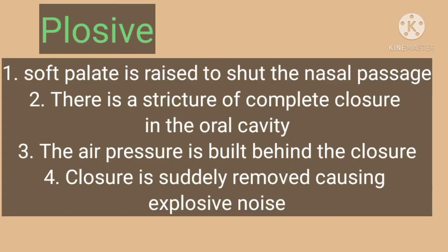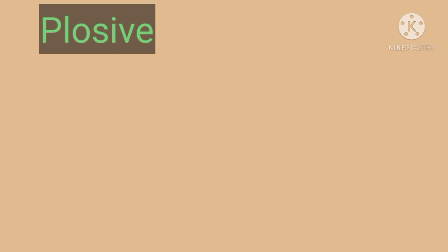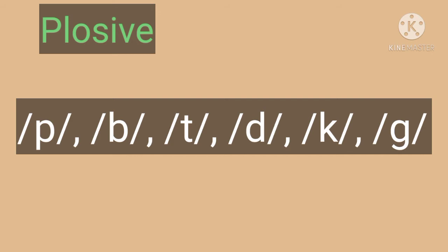During the production of plosive sounds, the soft palate is raised to shut the nasal passage. There is a stricture of complete closure in the oral cavity. The air pressure is built behind the closure, and the closure is suddenly removed causing an explosive noise. The examples of plosive sounds are p, b, t, d, k, g.